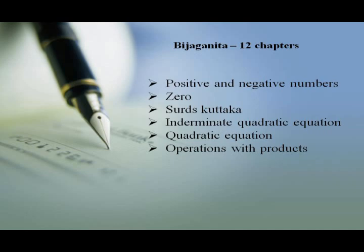Vijayakarnitha contains 12 chapters and covers topics like positive and negative numbers, zero, the Kuttaka, indeterminate quadratic equations with more than one unknown, quadratic equations with more than one unknown, and operations with products of several unknowns.